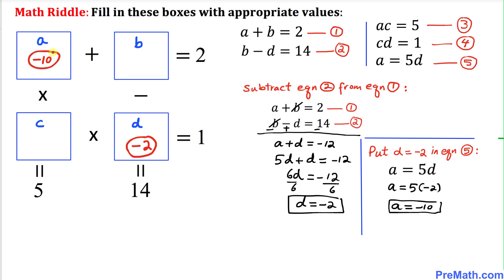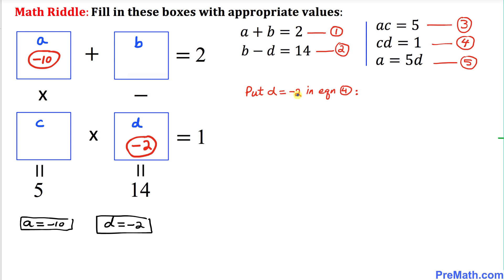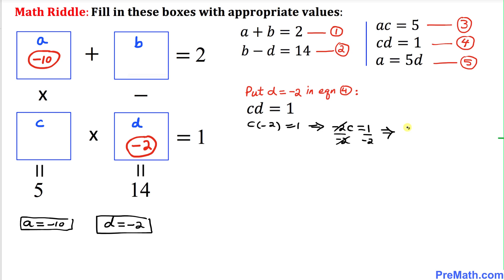Now substituting D equals negative 2 into Equation 4, we have C times negative 2 equals 1, giving negative 2C equals 1. Dividing both sides by negative 2, C equals negative 1/2. So our C value is negative one-half.